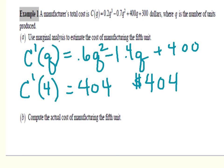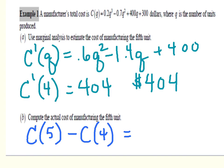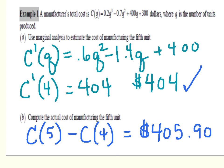Moving on to Part B, we're asked for the actual cost of manufacturing the fifth unit. This is different because the actual cost comes from the original cost function. We evaluate c of 5 minus c of 4. That calculation gives us $405.90. As you can see, the derivative is a very good approximation for the cost of the next item when you actually find the cost in the function.